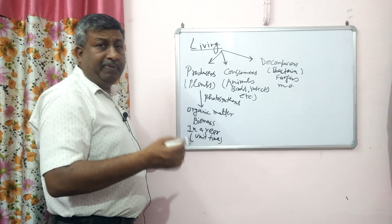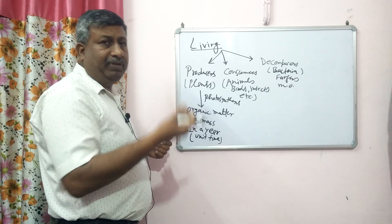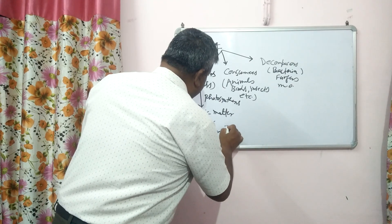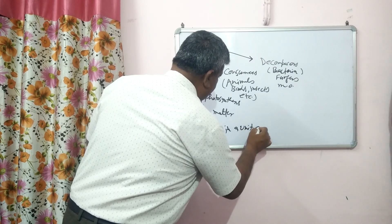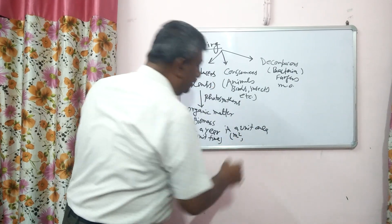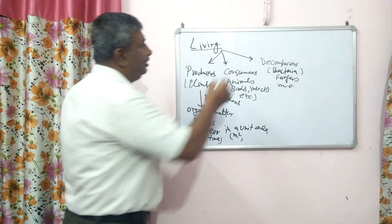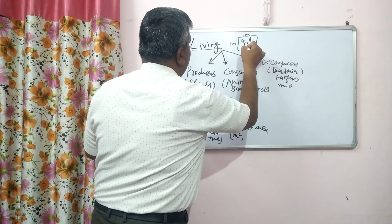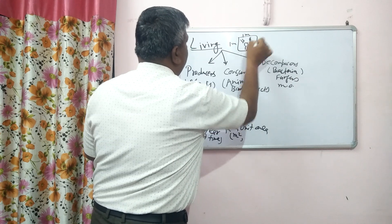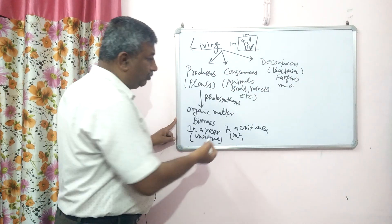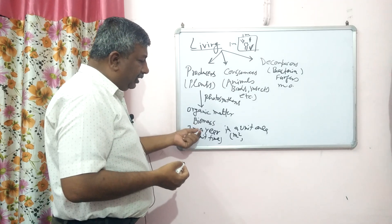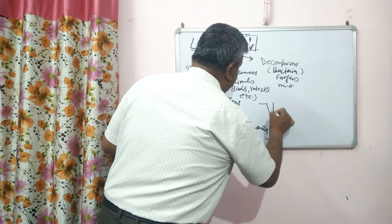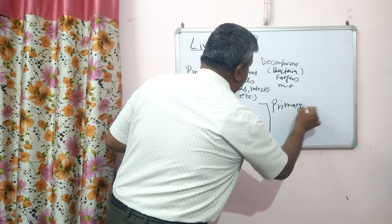How much biomass is produced in a unit time? The unit time may be one hour, one minute, or generally one year. And in a unit area — which may be a square meter — suppose this is one square meter area with grasses, trees, and shrubs. How much biomass is produced in one square meter area in one year? The biomass production in a unit area in a unit time is called primary productivity.